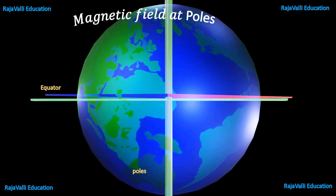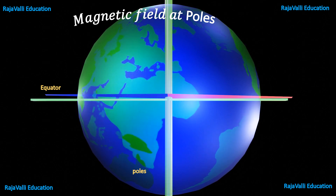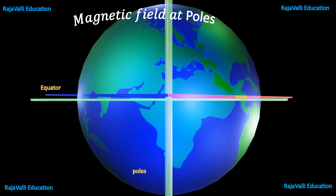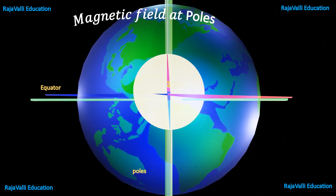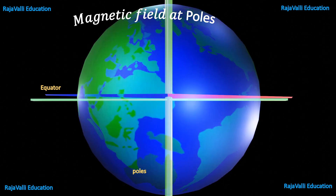Next we see magnetic field at poles. When a compass is placed along the poles, the magnetic inclination value becomes 90 degrees, that is, the angle of dip value becomes 90. Substituting this value into the horizontal component and vertical component formulas, we get the magnetic field at poles.